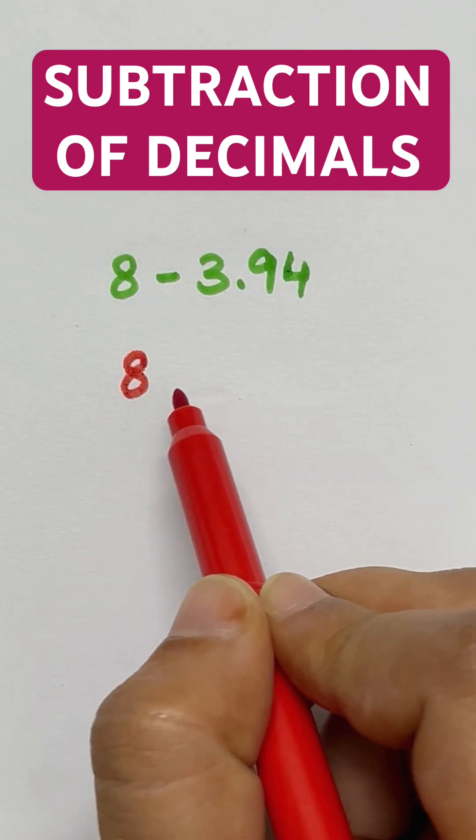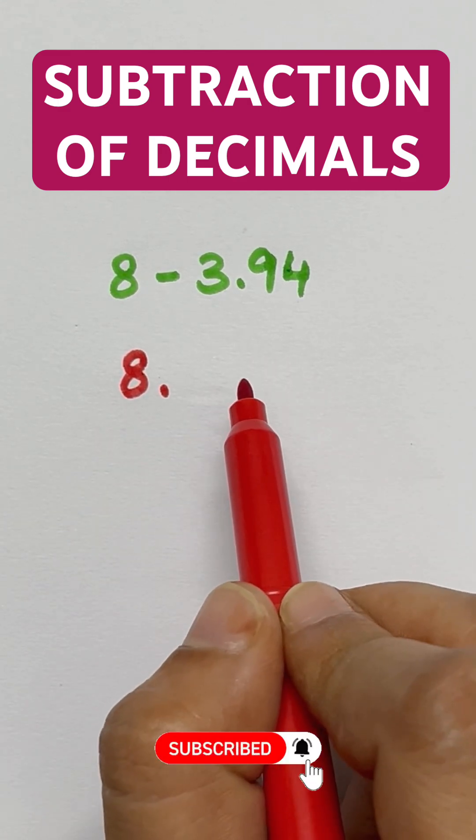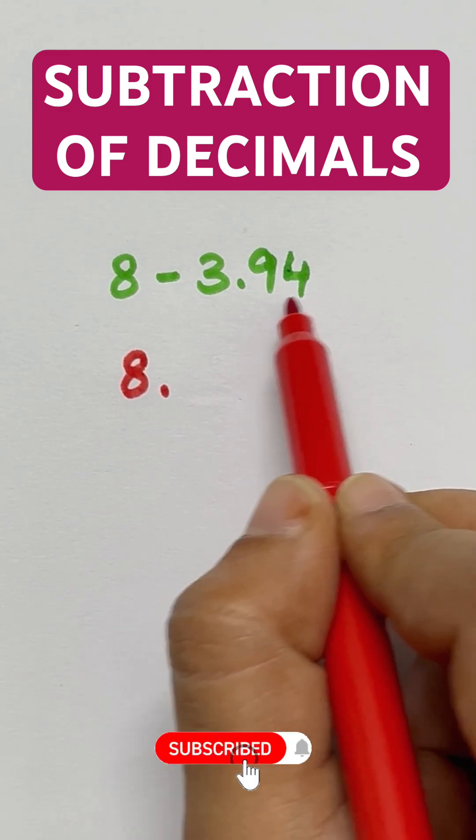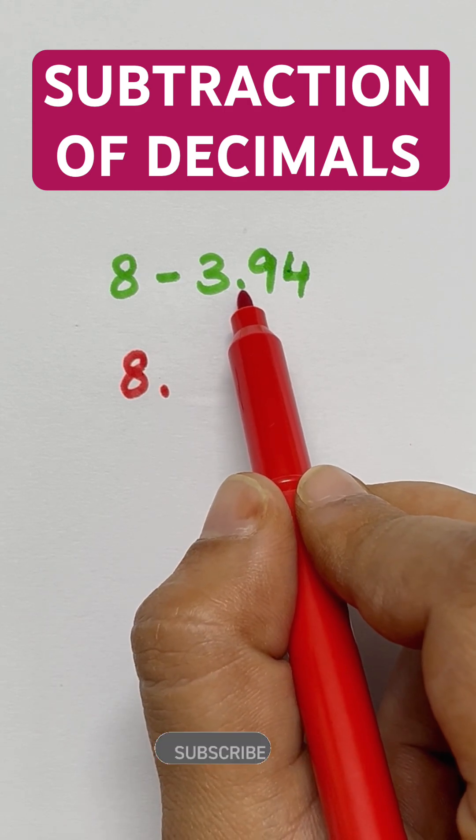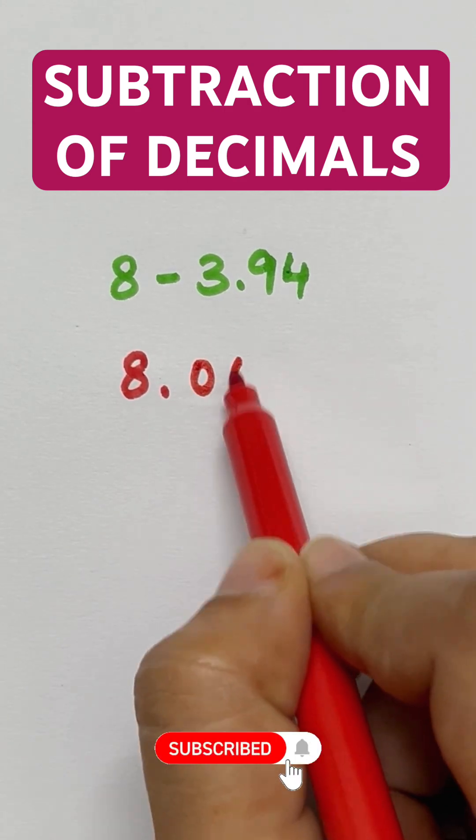First we will write 8, we will put point and after point we will put zeros. So how many zeros we will put? Look here, we will check this number. Here after this decimal there are 2 numbers, so we will put 2 zeros.